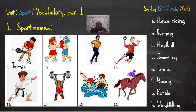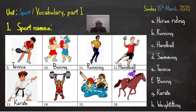قم بوصل كل صورة باسمها ثم واصل الفيديو لاكتشاف الأجوبة الصحيحة. Number ten - boxing. Very good. Number eleven - running. Number twelve - handball. Very good. Number thirteen - karate. Number fourteen - weightlifting. Number fifteen - swimming. And the last one, number sixteen - horse riding. Very good. Now correct your own mistakes if you have any.